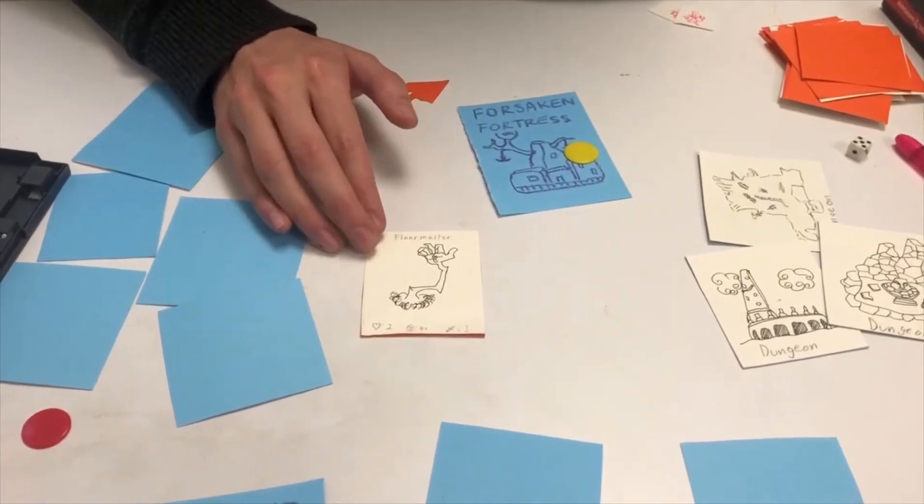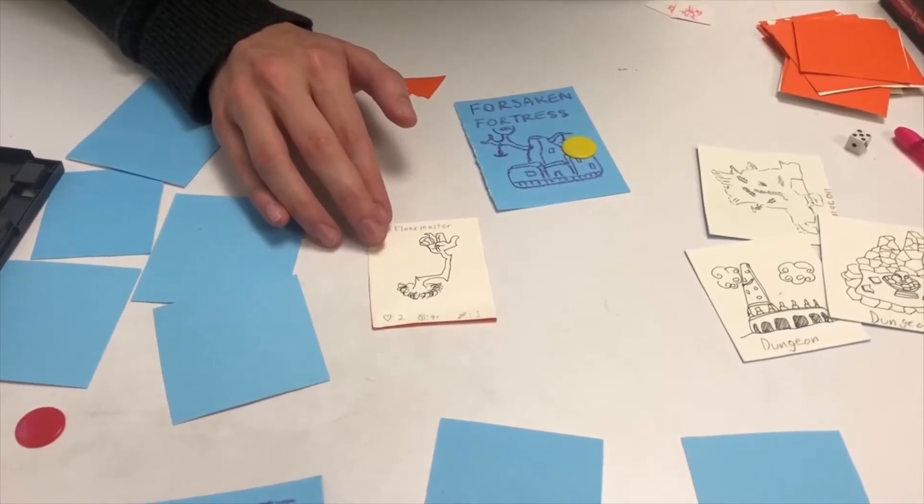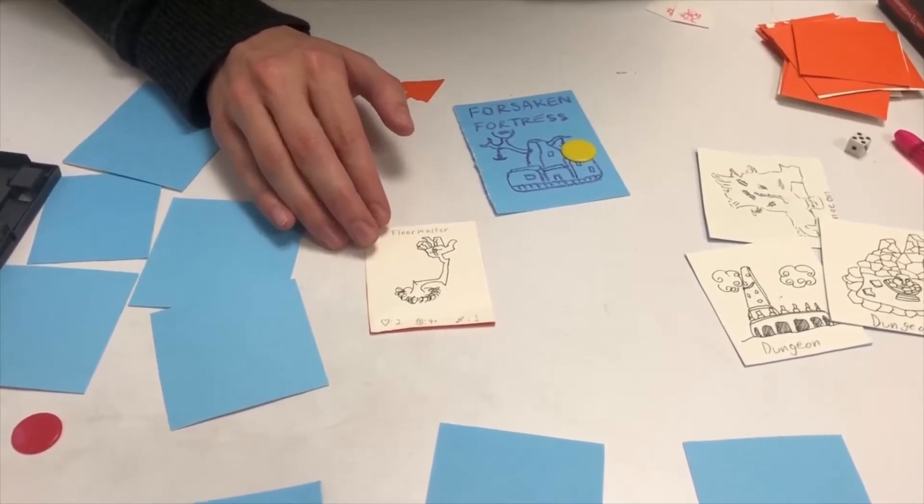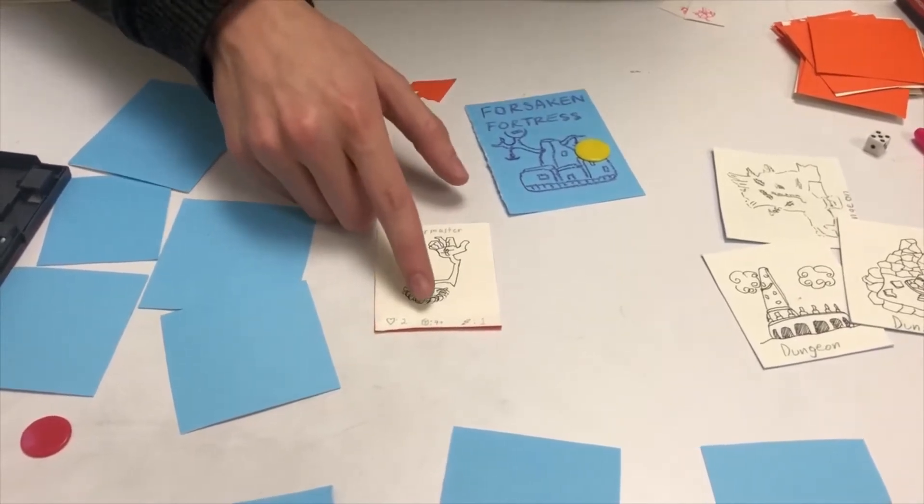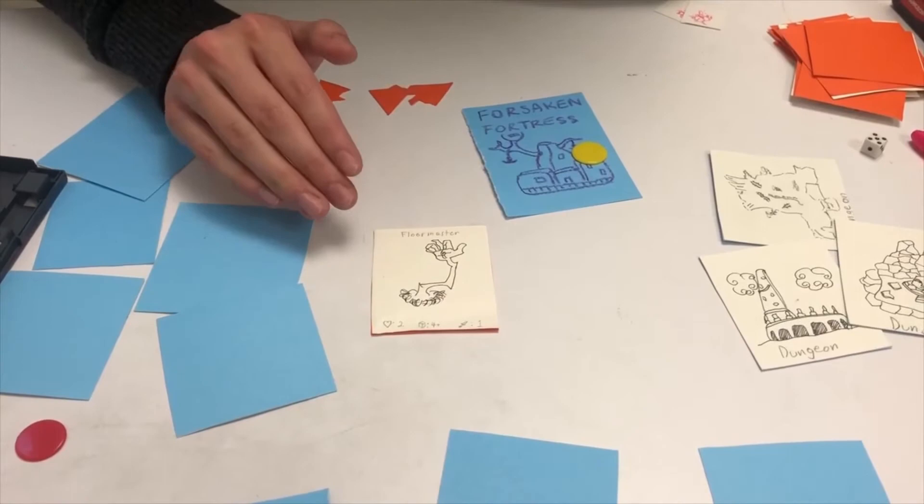Keep in mind that monsters have special effects that are written in the monster table. For example, the floor master will end your turn if you try to attack it and fail. Whenever a combat starts, the monsters heal back to full health.